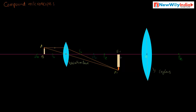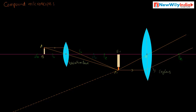Where is the final image formed? A ray parallel to the axis, after refraction, passes through the principal focus of the eye lens. Another ray passes through the optical center. These two rays do not meet anywhere, so they are extended backward. Where the extended rays meet, the magnified image is formed.